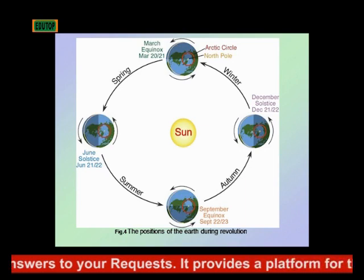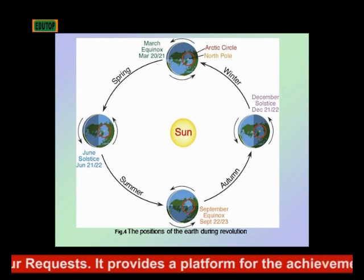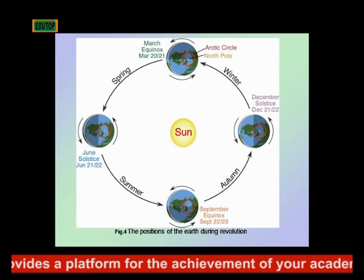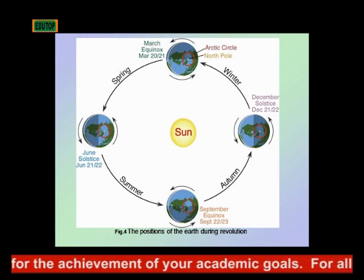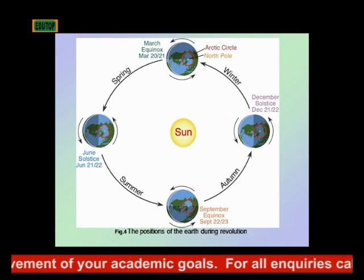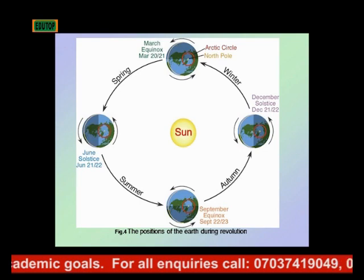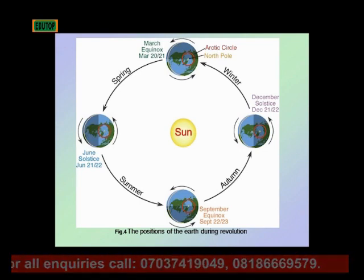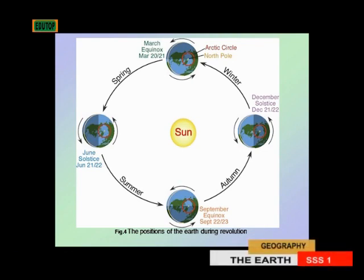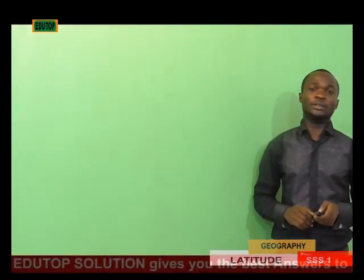You can see March, where we have spring and winter giving us the various seasons, and autumn and summer also giving us the various seasons based on the revolution of the earth. As the earth revolves, equinox occurs and solstice also occurs, where we have equal day and equal night, and in the other case, varying lengths of day and night. Now let's continue as we look at latitude and longitude.